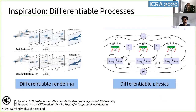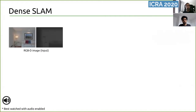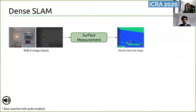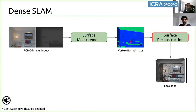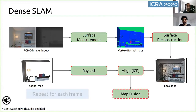Processes such as rendering in graphics and simulation in physics are being made differentiable in this paradigm to embed stronger domain-specific information into learning algorithms. However, the case for SLAM is not straightforward. Looking at a traditional dense SLAM system: from an input RGBD image, surface measurements are extracted in the form of vertex and normal maps. The underlying geometry is then mapped in a local frame using signed distance functions, aligned with a global map by raycasting and ICP. The aligned maps are fused to update the global map, and this process is repeated for every incoming frame. Notice how several steps in this pipeline, shown in red boxes, are non-differentiable. With the goal of developing a fully differentiable SLAM system, we present Grad SLAM.